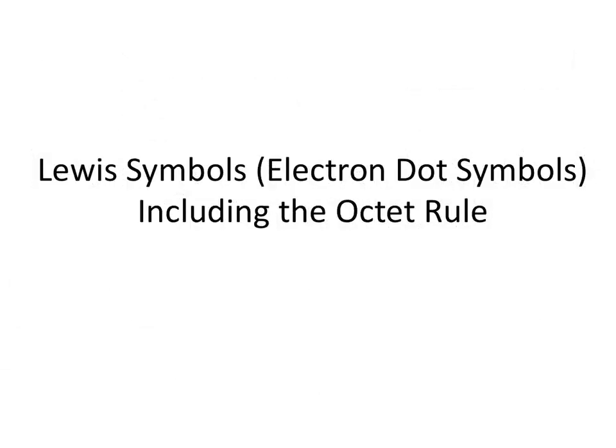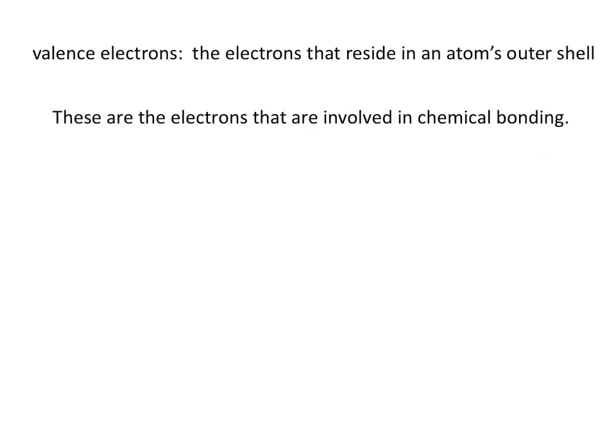Hello and welcome to the Chemistry Solution. This tutorial is on drawing Lewis structures, or electron dot symbols, including the octet rule. In order to draw a Lewis structure, you need to know how many valence electrons an atom has. Valence electrons are the electrons that reside in an atom's outer shell, and these are the electrons that are involved in chemical bonding.